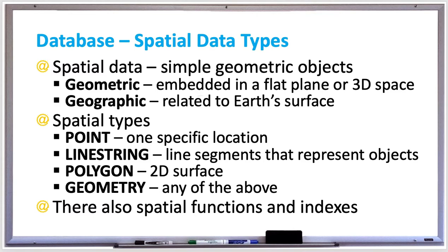There's line string, where one or more line segments represent objects like streets on a map or state boundaries. The line can also be formed into a rectangle or other shape, but it's one-dimensional and does not have an area.